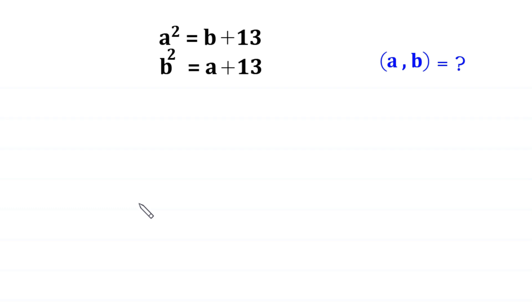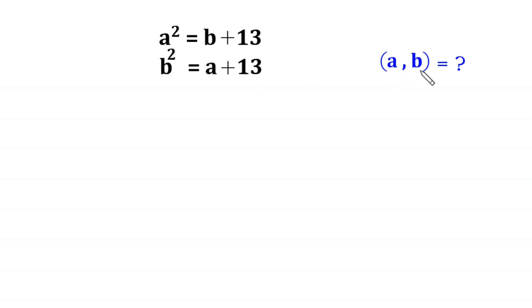Hello, welcome to how to solve this very nice system of equations. A squared is equal to b plus 13, and b squared is equal to a plus 13. We need to find all possible values of a and b.